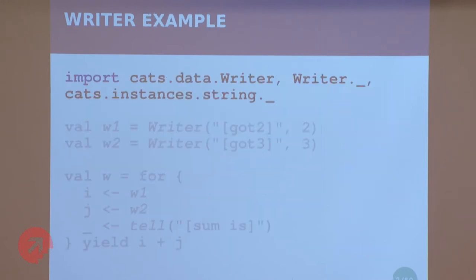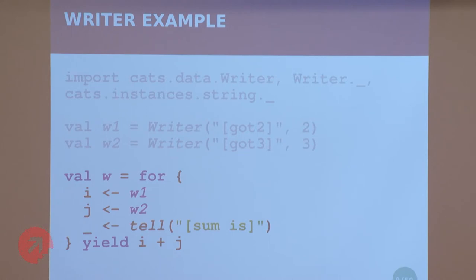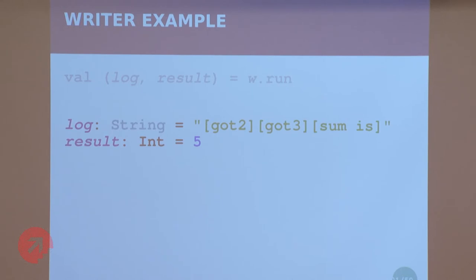Here's a quick example using the Cats Writer implementation. We use some imports, then create two writers — values two and three — and the log is just a string: 'got two', 'got three'. We throw them into a for-comprehension, add some additional log in there, and sum up the values. Then we run the writer and get a log and a result. As expected, the log is everything combined, and the result is five.